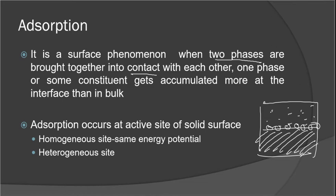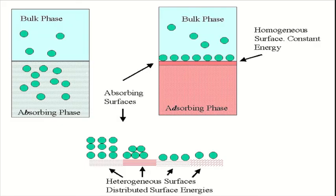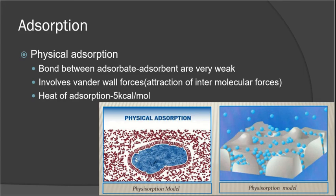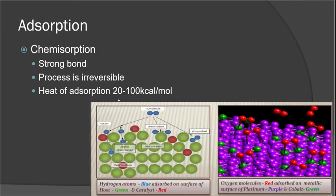Adsorption occurs on both homogeneous and heterogeneous surfaces. There are two types of adsorption: physical adsorption and chemical adsorption. Physical adsorption is weak. Chemical adsorption, on the other hand, involves stronger bonding at the surface parts, and so it is an irreversible process.